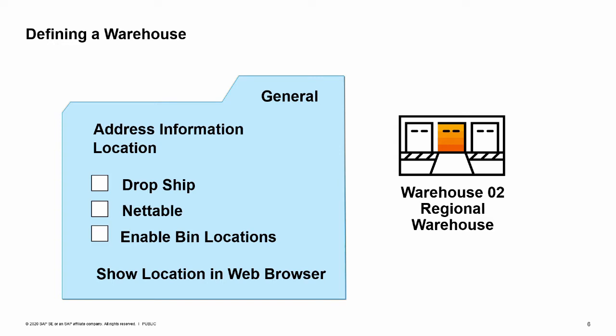Most warehouses are created for physically storing items, but a warehouse can also be set up as a virtual warehouse to manage business processes where goods are shipped directly to your customers from one of your vendors. We call this a drop ship warehouse. If you choose to set a warehouse as a drop ship warehouse, you will have the additional option to manage serial numbers and batches in the drop ship warehouse.